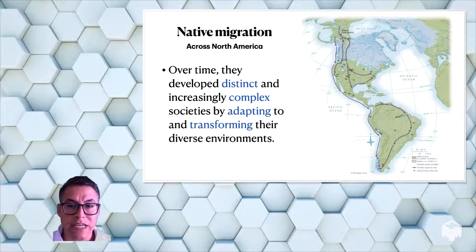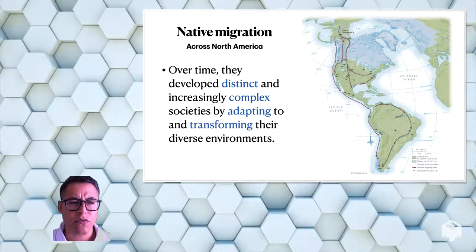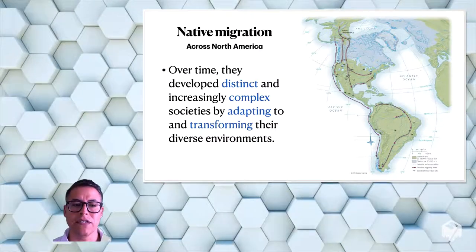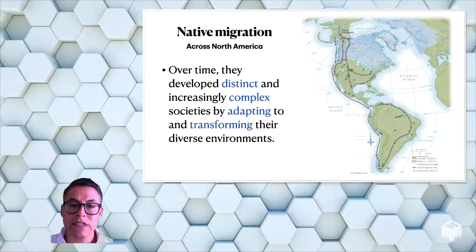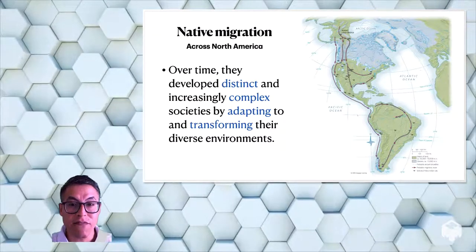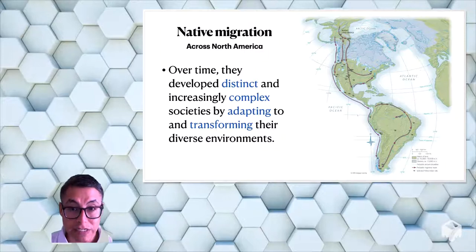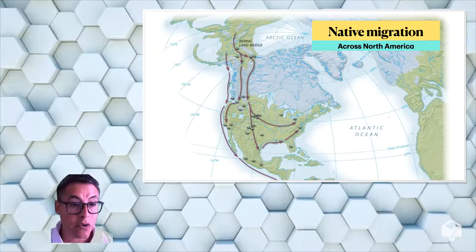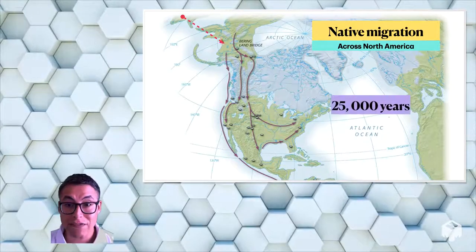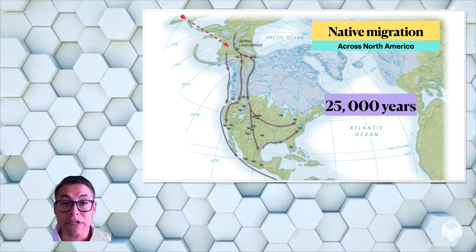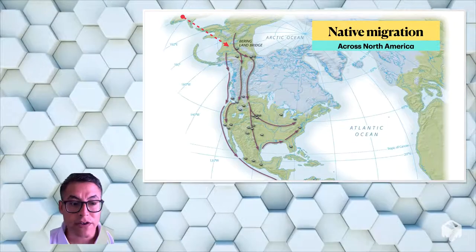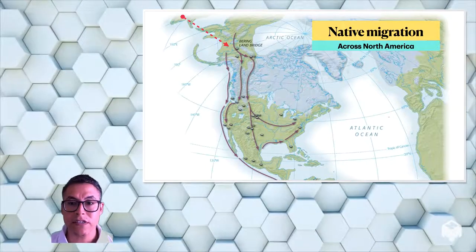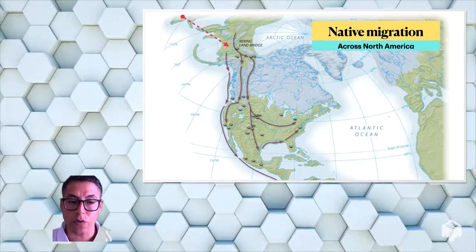Natives arrived into what is now North America through migration. And so over time, they developed distinct and increasingly complex societies by adapting to their environment and by transforming their environment. And each one of these civilizations had a diverse set of environmental and geographical characteristics that they had to deal with. As these people are crossing into what is now North America over 25,000 years, these people are encountering different climates, different landscapes, even different kinds of animals and plants.